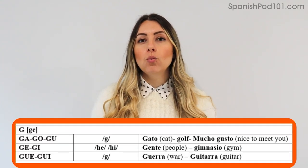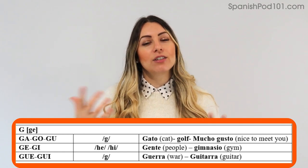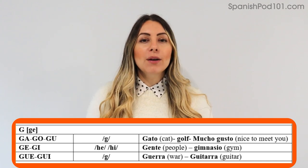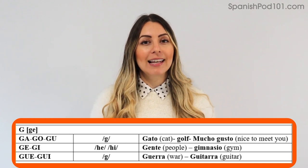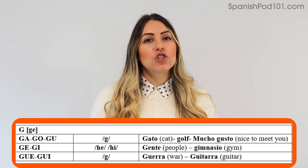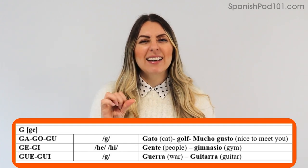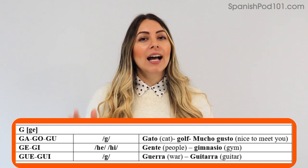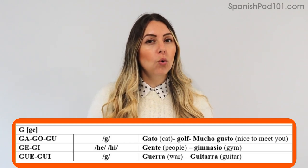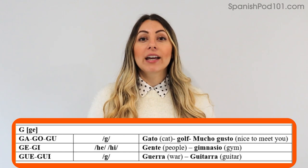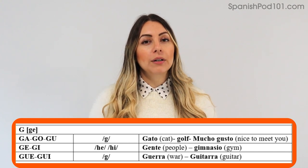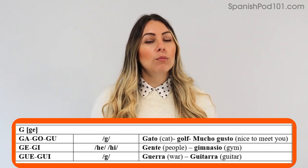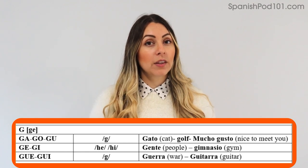The next letter is G (ge). First, how we say the letter in Spanish — ge. But it has different pronunciations depending on which vowel follows. For G-A, G-O, G-U, we say the hard G sound: ga, go, gu. For example: gato, golf, mucho gusto.